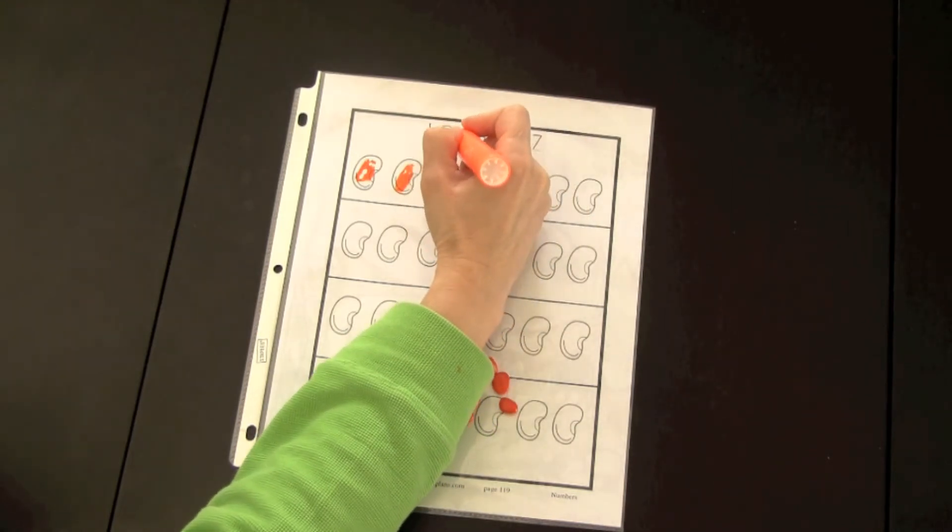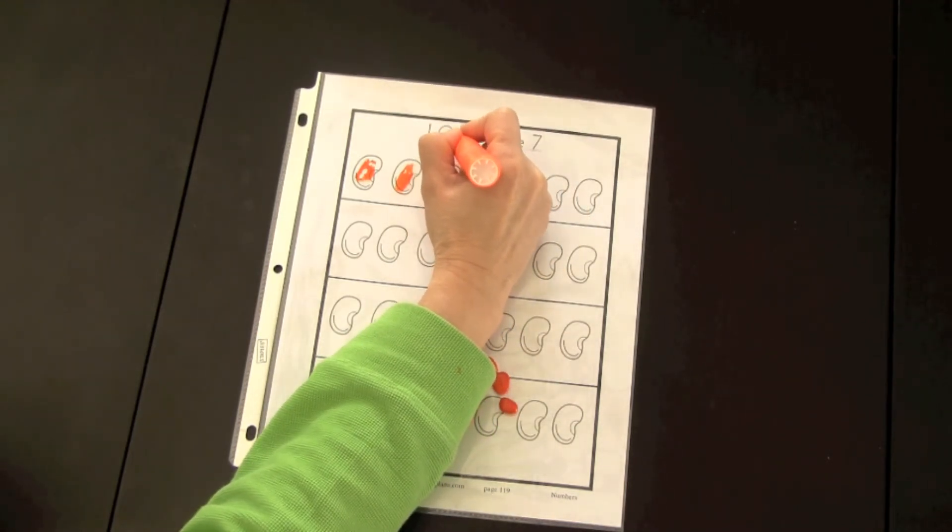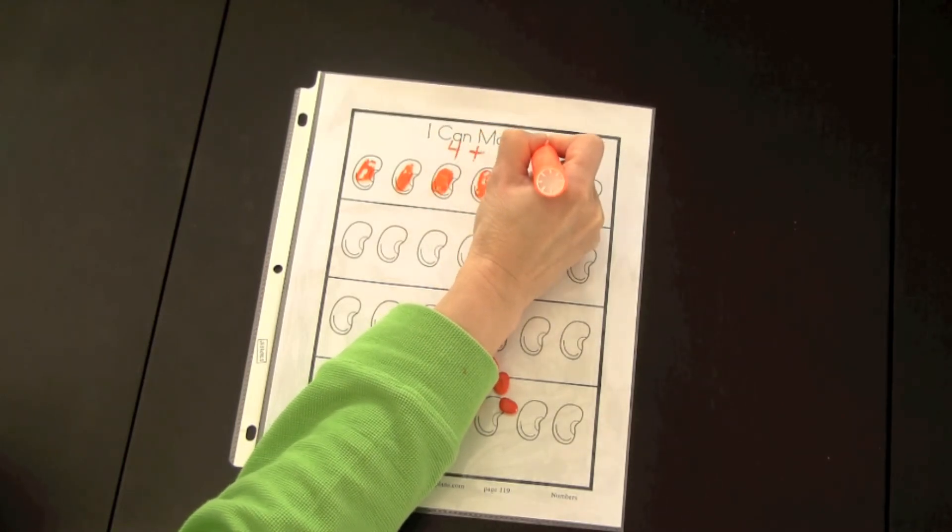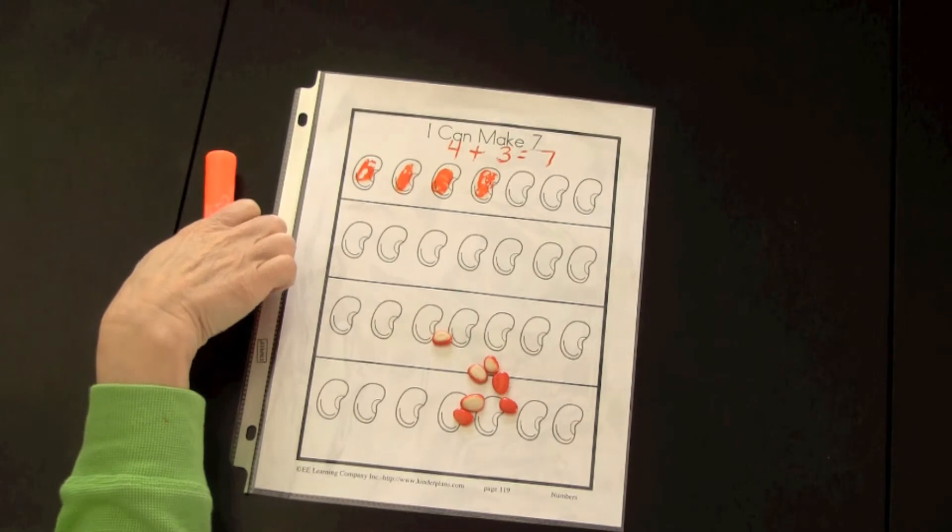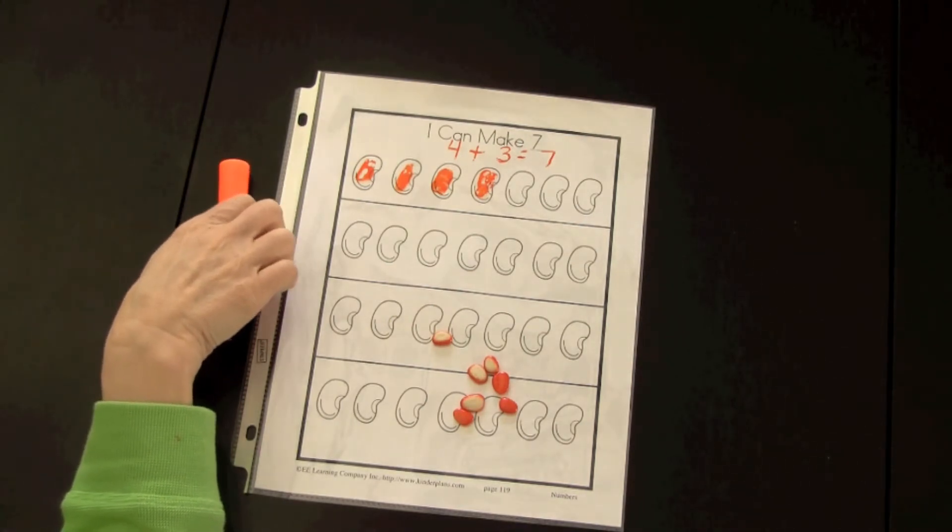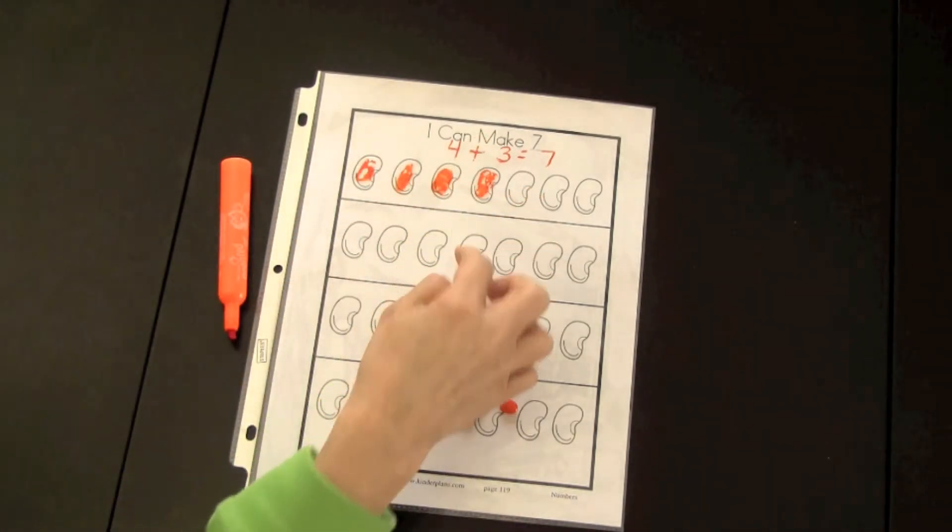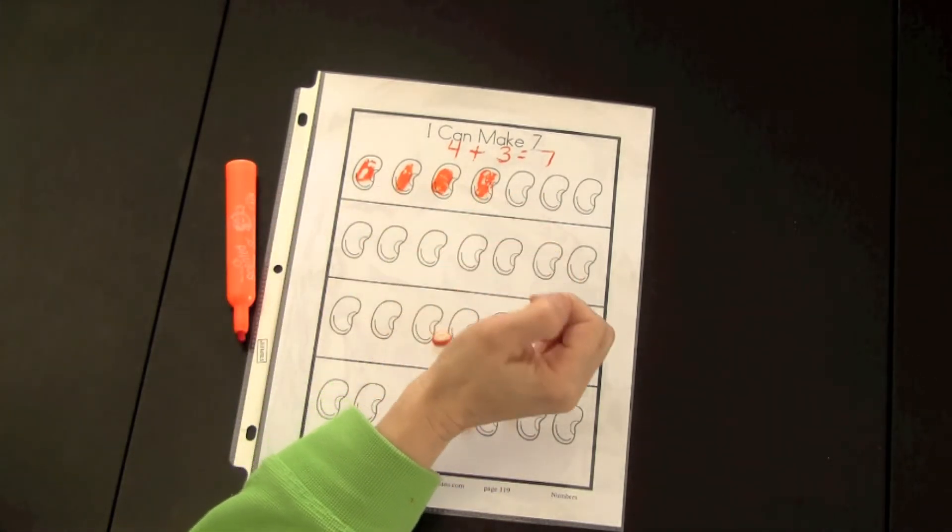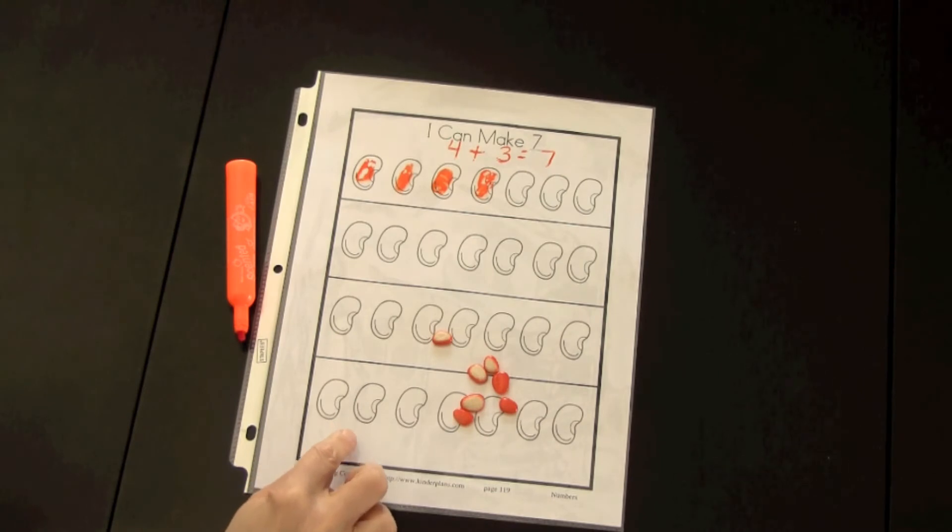If you require the children to make a sentence with it, they can do that on top: four plus three equals seven. You'll notice that I have placed this paper in a plastic cover. This is great if you want to reuse the sheet each time. I've used a washable marker that can easily be washed off and the sheet reused for another person playing the game.